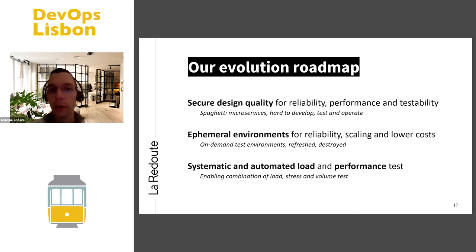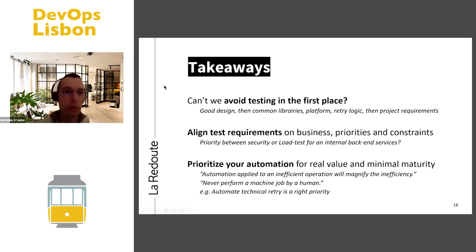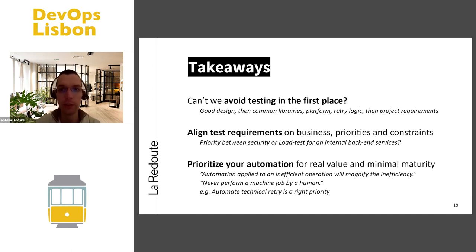Looking ahead, we want to keep building real software quality and good design, because this avoids a lot of testability problems. We are looking at ephemeral environments, probably leveraging Kubernetes or containers, to have on-demand test environments that are more reliable and scalable — especially for component and end-to-end testing. We are also looking at moving to more systematic load testing, as right now it is somewhat manual and on-demand.